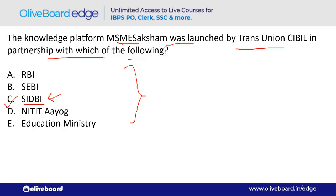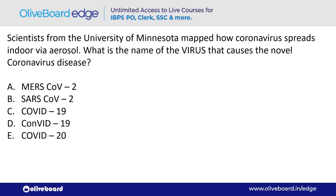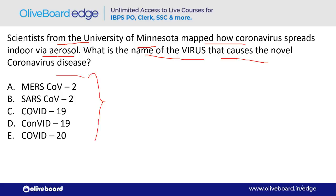Scientists from the University of Minnesota mapped how coronavirus spreads indoors via aerosol. What is the name of the virus that causes the novel coronavirus disease? The answer is SARS-CoV-2.